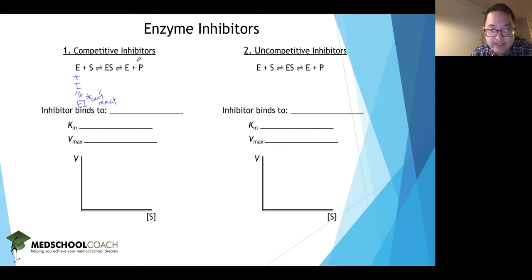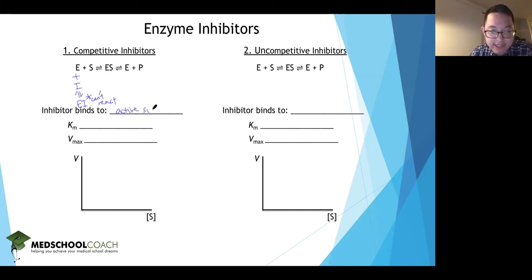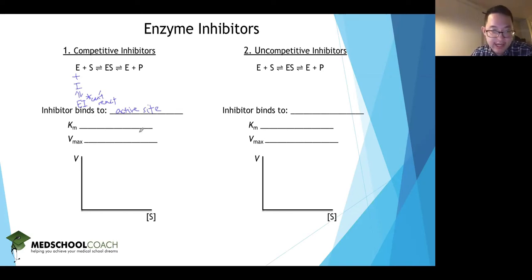The enzyme-substrate complex then reacts to form the enzyme and the product. The competitive inhibitor binds at the active site — the site of catalytic activity — because both the substrate and the inhibitor have to bind to the same site, and the substrate binds at the active site.